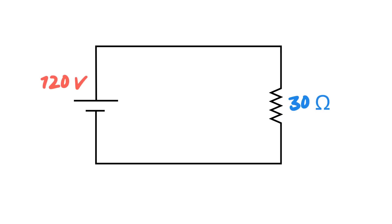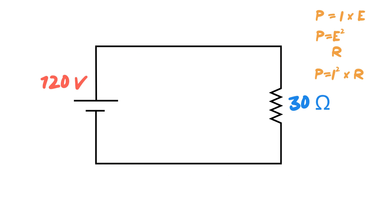Let's assign some values, because it's always easier to work with something when we know what we're talking about. Right now I've got a 120-volt battery and a 30-ohm resistor connected up — just this one load. When we're talking about Watt's Law, we're looking at the relationships between voltage, resistance, current, and power.